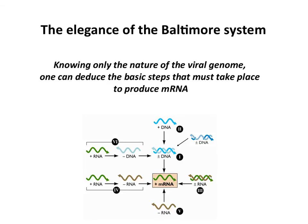This is really an elegant system. All you have to know is what kind of genome is in the virus, and then you can tell me all of the steps that have to be taken to get mRNA. Because when a virus brings a genome into the cell, that's what it has to do — make mRNA to initiate the infectious cycle. If you can remember this scheme, you'll be able to trace it. And that's really a lot of what we want you to know in this course.